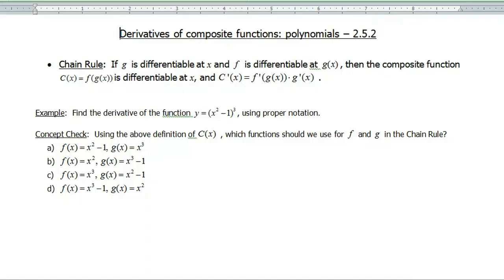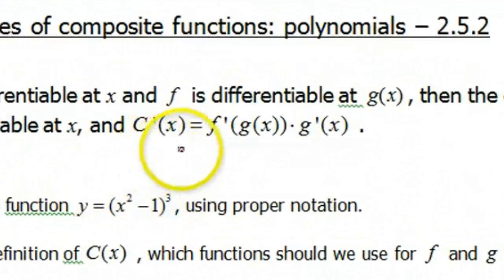So the chain rule says that if g is differentiable at x and f is differentiable at g(x), then the composite function C(x) = f(g(x)) is also differentiable at x. And the derivative is defined to be f'(g(x)) times g'(x).